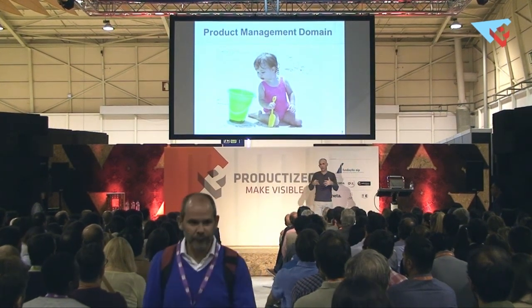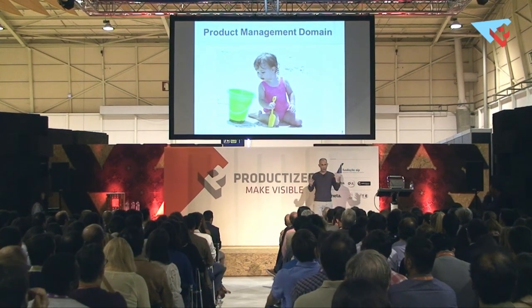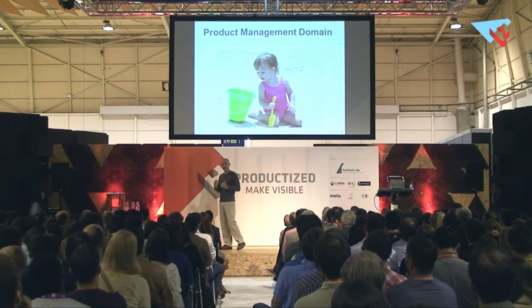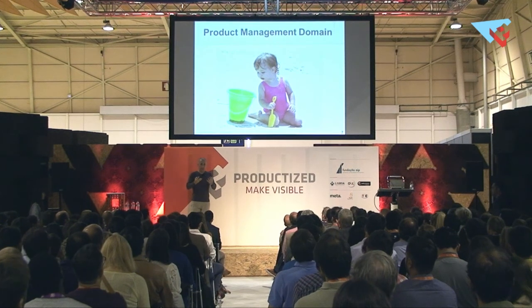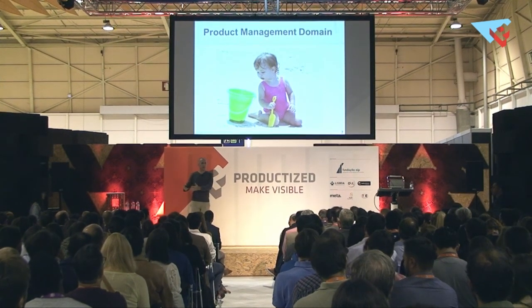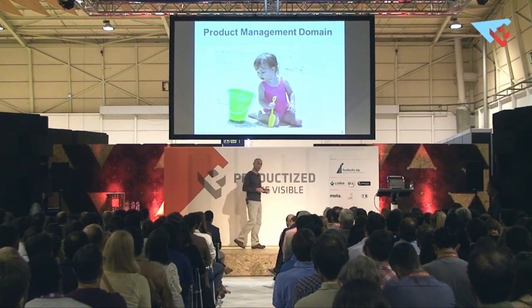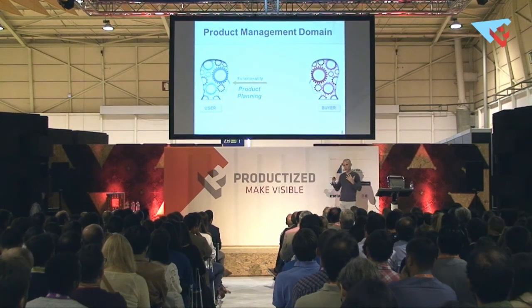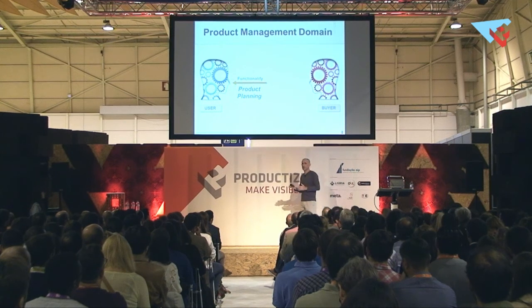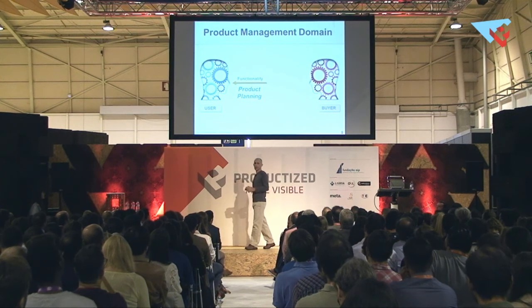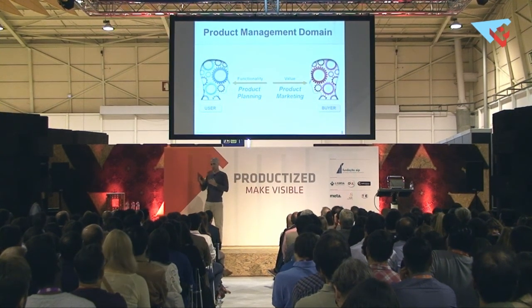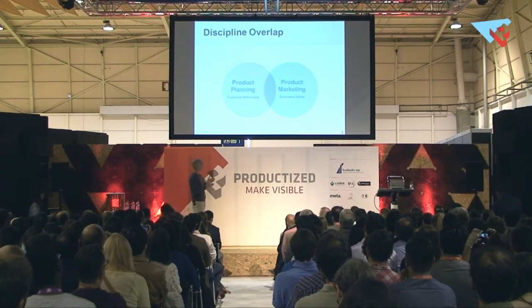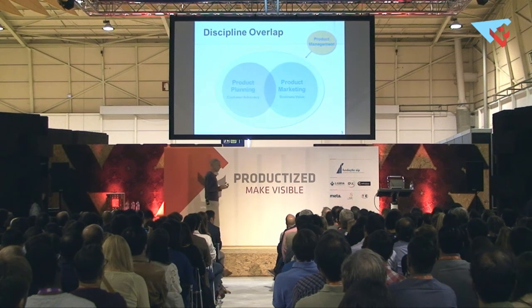In this simple example, we learn that there are two entities relating to the product. We have the parents, who are the buyer, and the child, who is the user. The parents are concerned with value — what is the return on investment for the economic sacrifice they're making? The child is only focused on functionality — what can they do with the product? Companies use a discipline called product planning to define the functionality the product needs, and an adjacent discipline called product marketing to convey value to the buyer. Product planning and product marketing together are called product management.